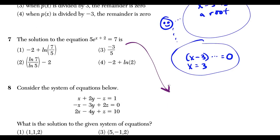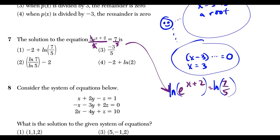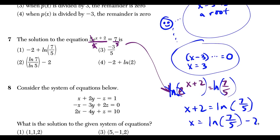Question 7: to solve 5e^(x+2) = 7, divide both sides by 5 to get e^(x+2) = 7/5. The inverse of e is natural log, so take the natural log of both sides. Natural log and e cancel, leaving x + 2 = ln(7/5). Subtract 2 to get x = ln(7/5) − 2. This matches choice 1, where the −2 is written in front: −2 + ln(7/5).